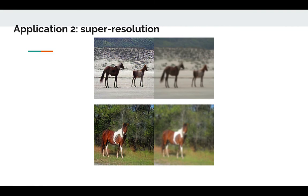The second application is super resolution. As I mentioned before, high resolution medical images need more storage and more computation power. So we hope to find a way to transfer from low resolution to high resolution. Here is the experiment we have already done. At the right hand, you can see images that have been processed by a filter, so they are low resolution. At the left hand are the images that we processed using CyclicGen.